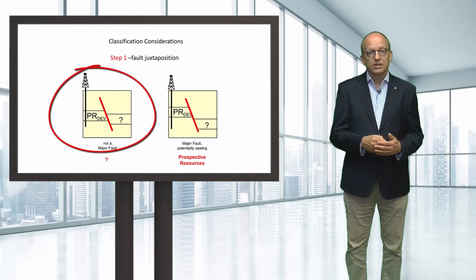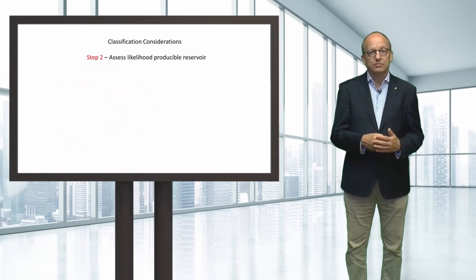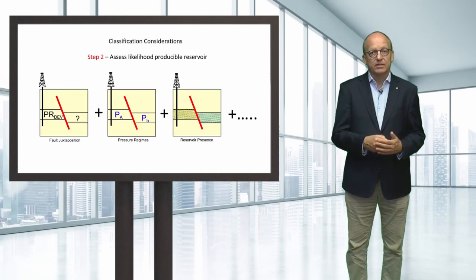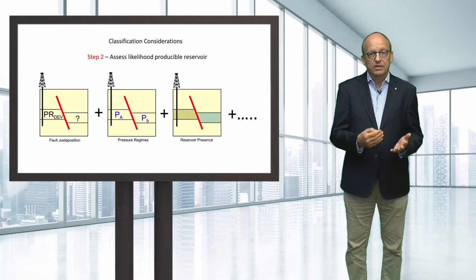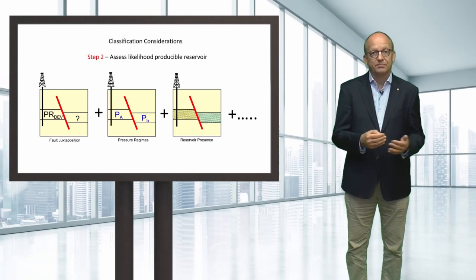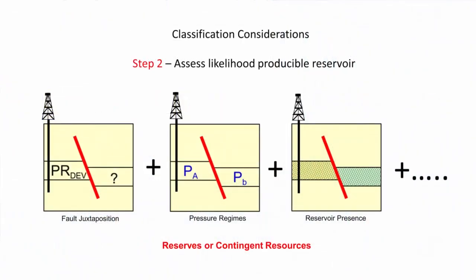If the fault throw condition is met, we need to do more analysis before we can properly make this assessment, and we must go to step two, where we assess the likelihood of economically produceable reservoir in the unpenetrated fault block. For this assessment, we will take many sources of data analysis into consideration as part of an integrated analysis using all available geoscience and engineering data. Sources could include pressure data, well test data, seismic inversion and attribute results, as well as production performance or reservoir simulation results. The results of these various analyses should be internally consistent and not contradict each other. Depending on the outcome of this integrated assessment for the likelihood of hydraulic communication across the fault, we may be able to assign either reserves or contingent resources to the unpenetrated fault block.